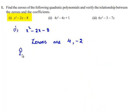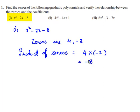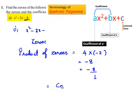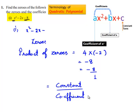The product of the zeros is equal to 4 multiplied by minus 2, which is equal to minus 8. This minus 8 can be written as minus 8 by 1. Here minus 8 is the constant term and 1 is the coefficient of x squared. Therefore, the product of the zeros is equal to the constant term divided by the coefficient of x squared.